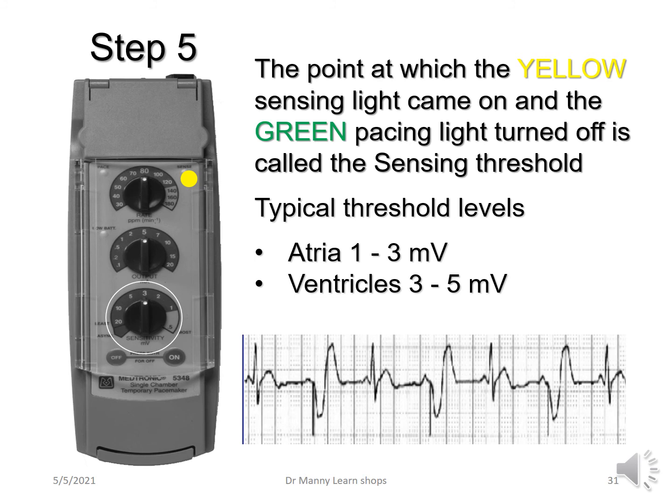In the rhythm strip, you can see the pacemaker pacing and then the inherent beat alternating. The pacemaker is saying: the rate has dropped below the set rate, so I pace; then it picks up, so I stop pacing; then it drops, so I pace again; then it increases, so I stop. This is demand mode pacing — the pacemaker senses inherent activity, stops pacing when good, and starts pacing when the rate falls.